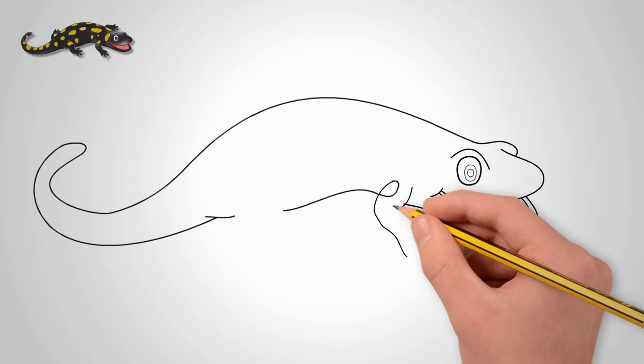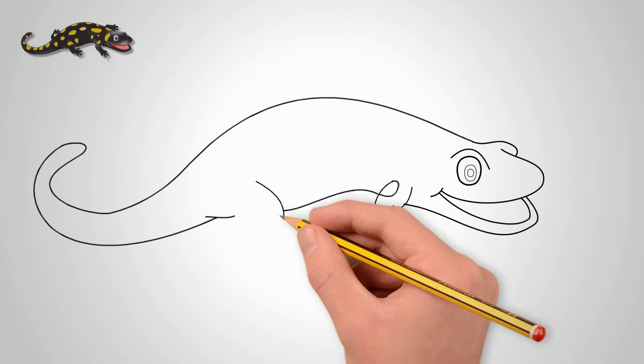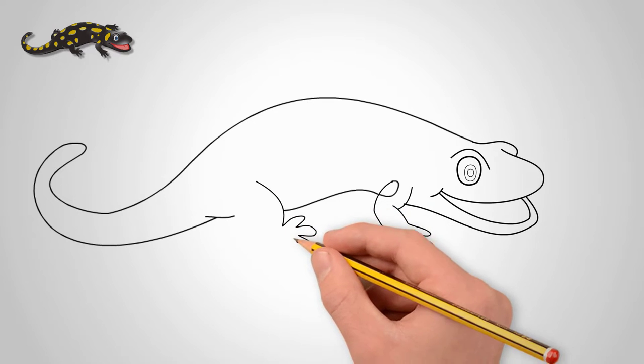Our lizard has 4 paws. Draw 4 paws of a salamander. We draw fingers on each paw.